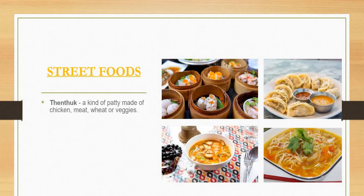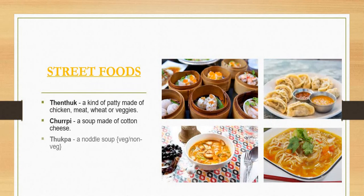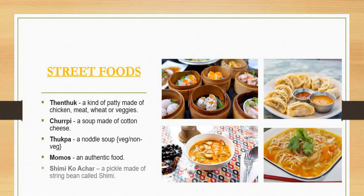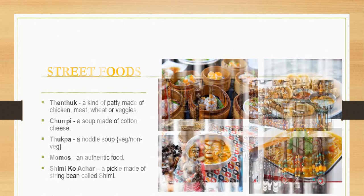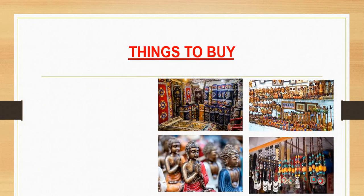Street foods to try include Thukpa, a kind of fatty noodle soup made with chicken, meat, wheat, or veggies; Chirpi, a soup made of cotton cheese; non-fried momos; authentic local food; and Shimi ko Achar, a pickle made of string beans called shimi.